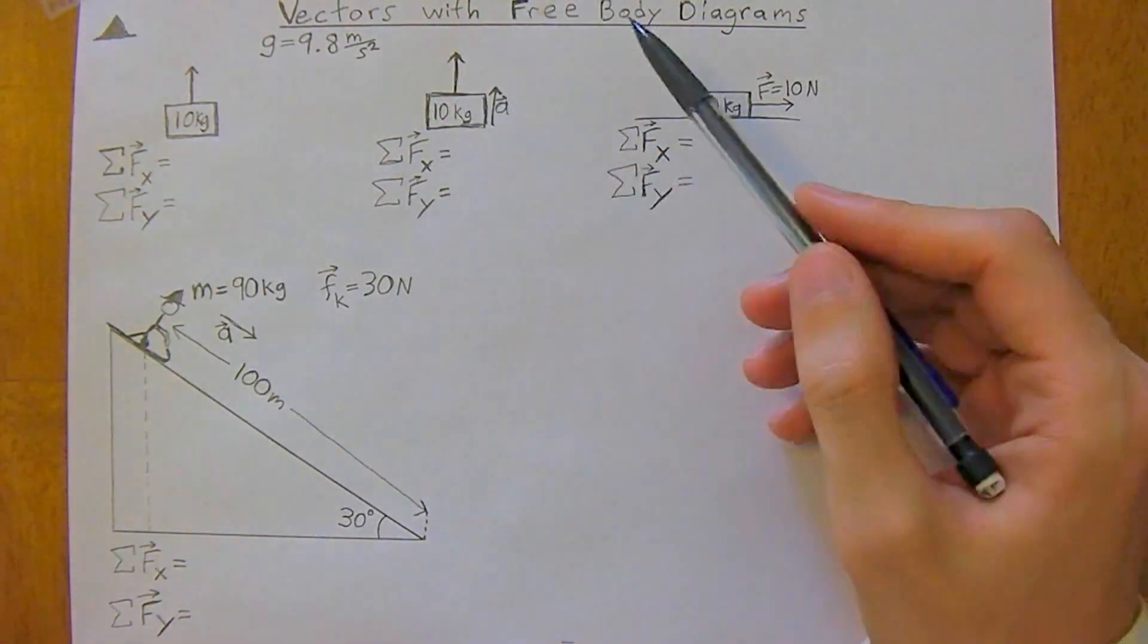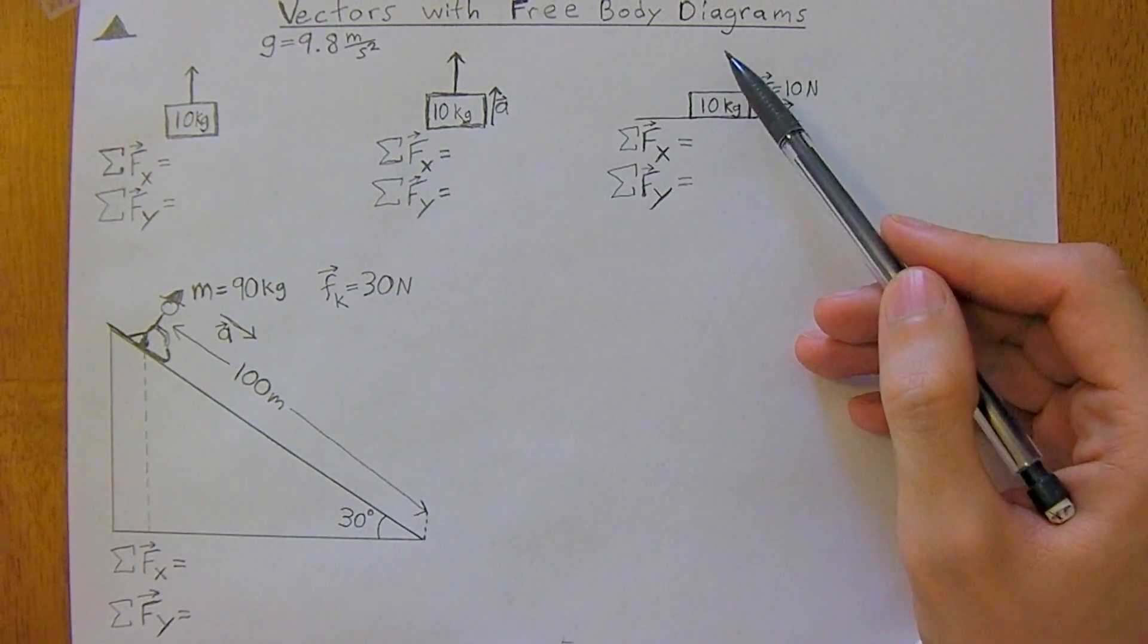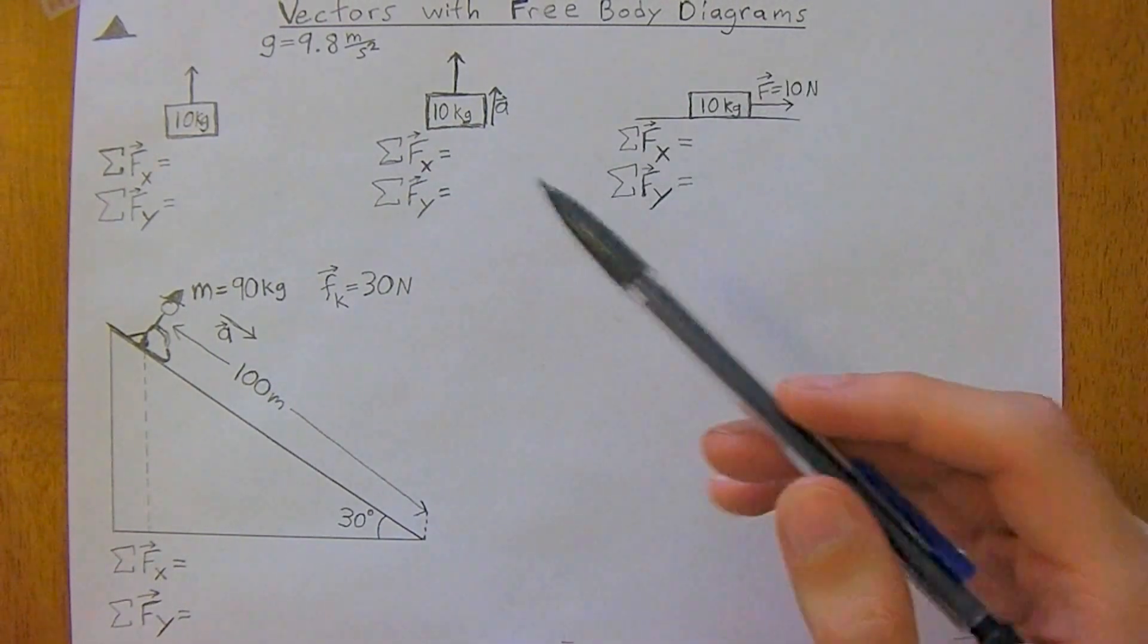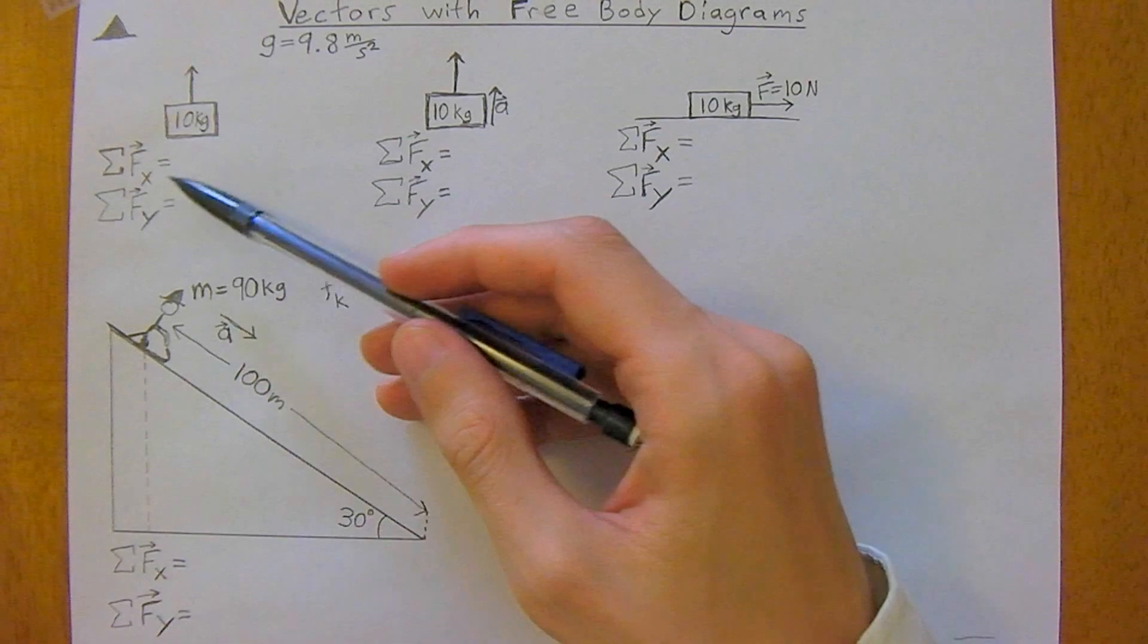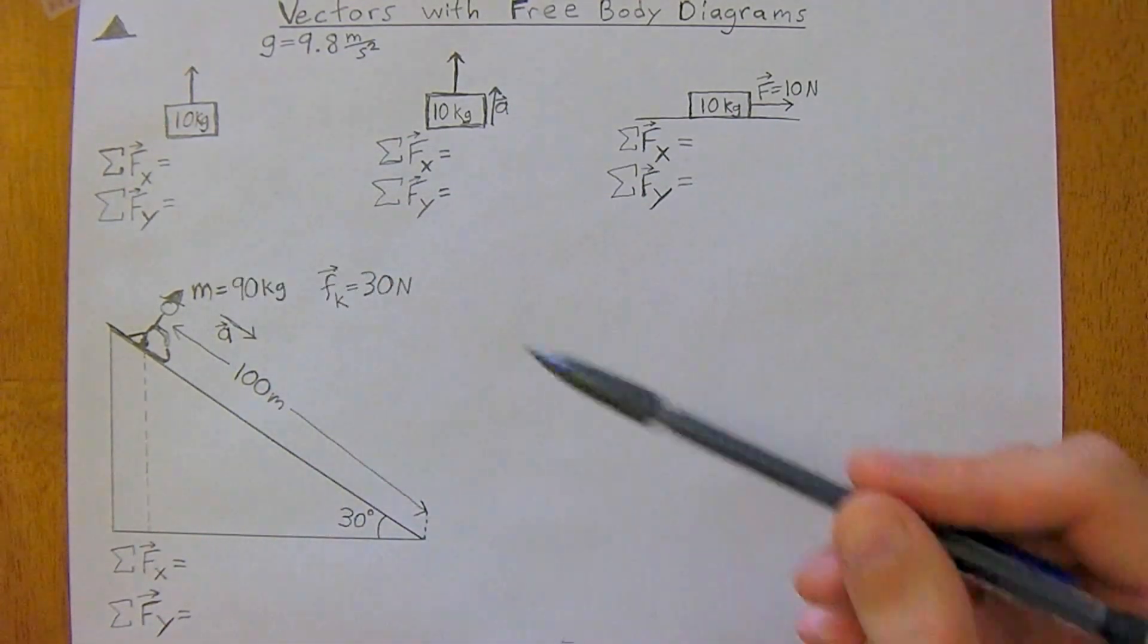So you've worked with vectors and you've worked with free body diagrams and identifying forces. Now it's just time to merge the two concepts and it's relatively easy to do when you break it out into component form. And by that I mean you look just in the x-direction on the x-axis and then you look just in the y-direction on the y-axis.